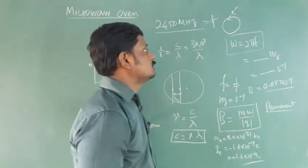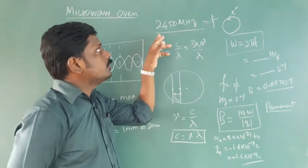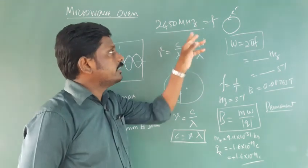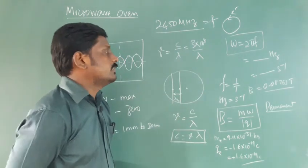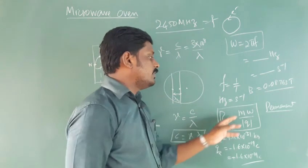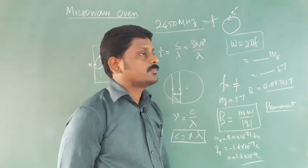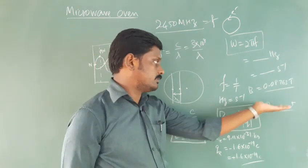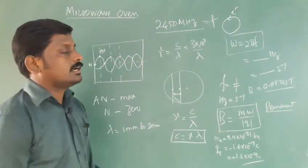We also solved a problem: a magnetron produces a frequency of 2450 megahertz. What is the required magnetic field to rotate the electron in the circular path? Using ω = 2πf and B = mω/Q, we get an answer of 0.08763 tesla. This magnetic field can be produced even with a permanent magnet, and it is enough to cook food because it is absorbed by the water molecules. Okay students.